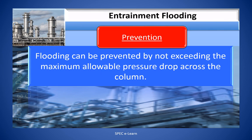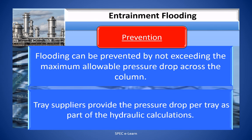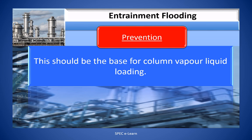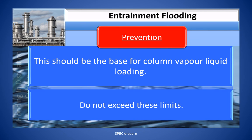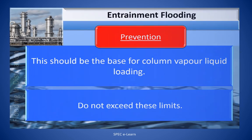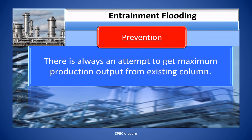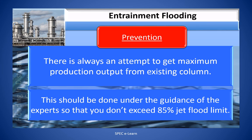Flooding prevention: flooding can be prevented by not exceeding the maximum allowable pressure drop across the column. Tray suppliers provide the pressure drop per tray as part of their hydraulic calculations — this should be the basis for column vapor-liquid loading, and these limits should not be exceeded. There is always an attempt to get maximum production output from an existing column; this should be done under the guidance of experts so that you do not exceed 85% of the jet flood limit.